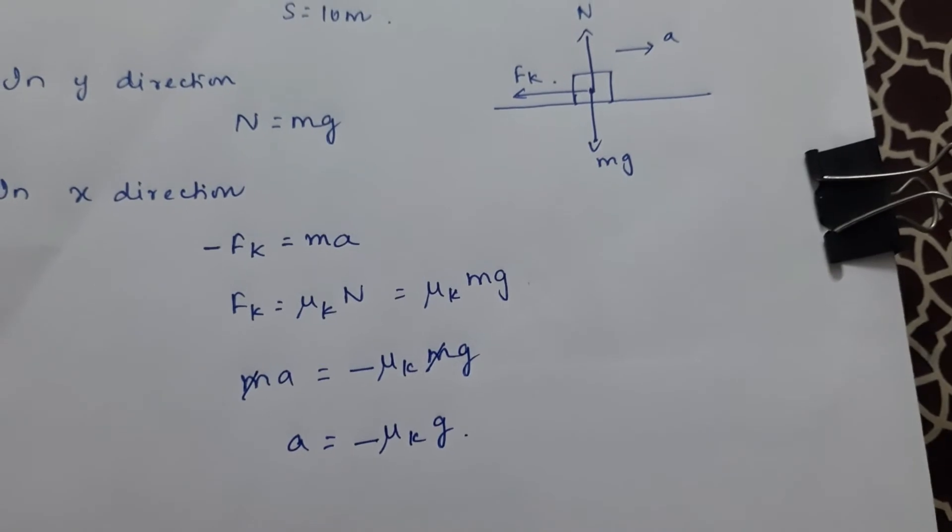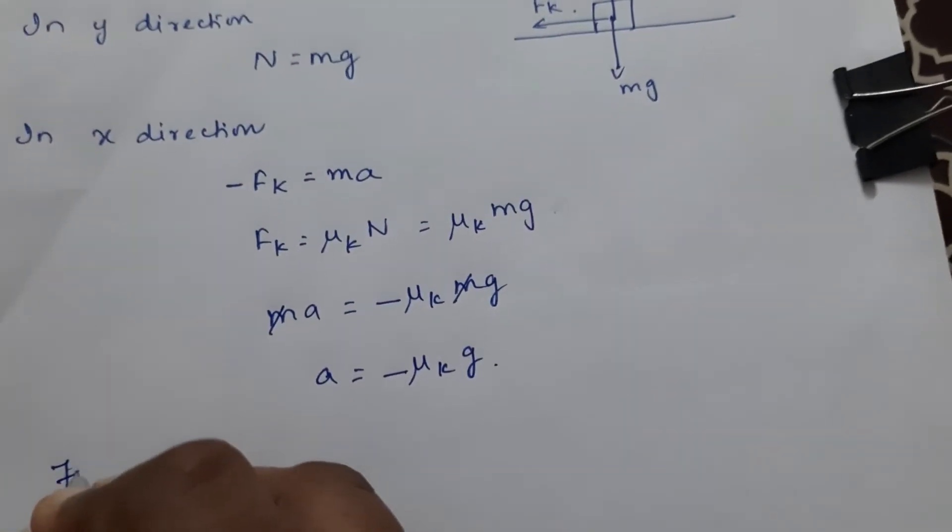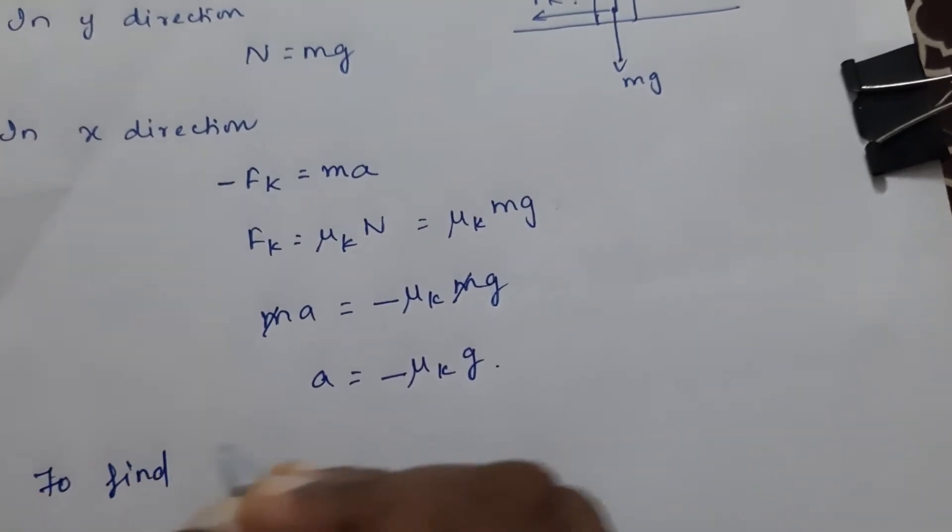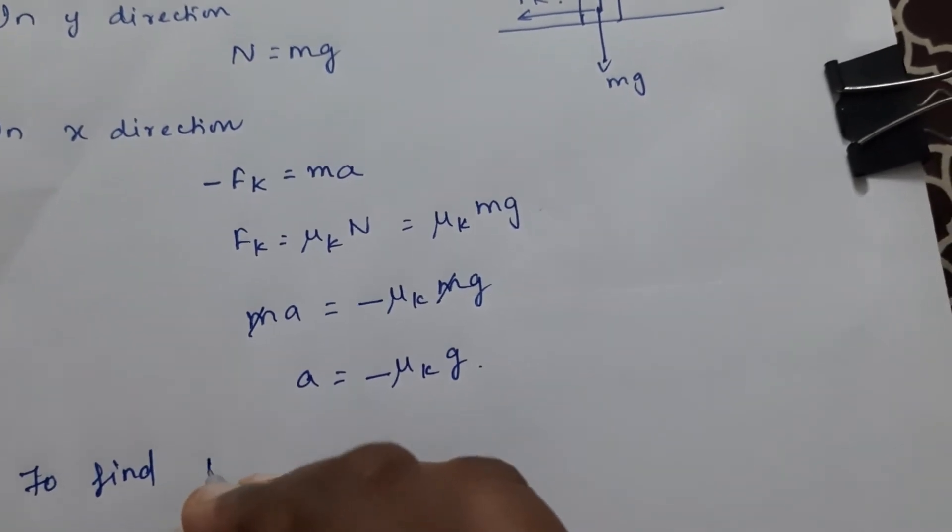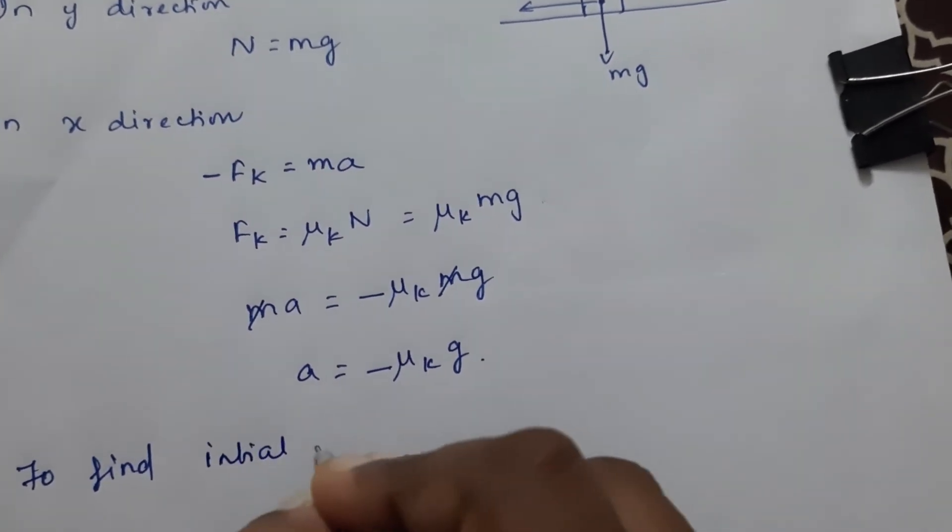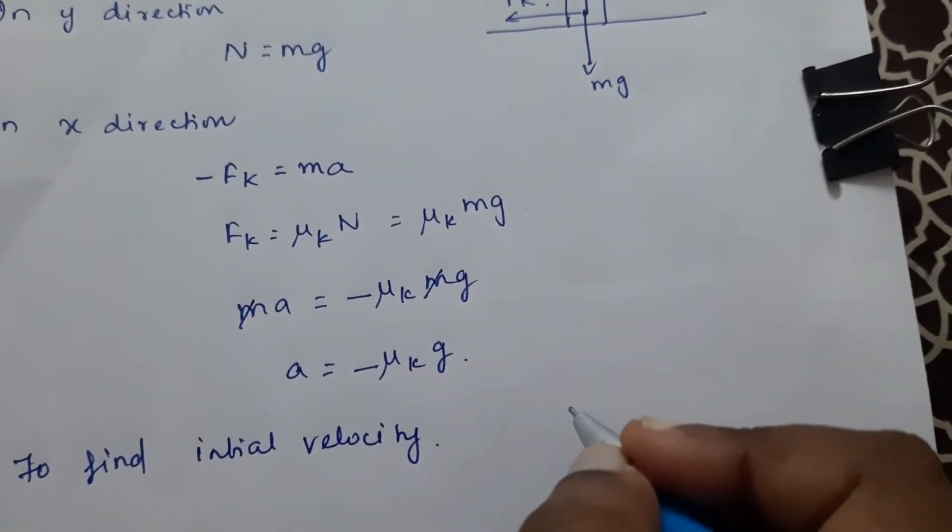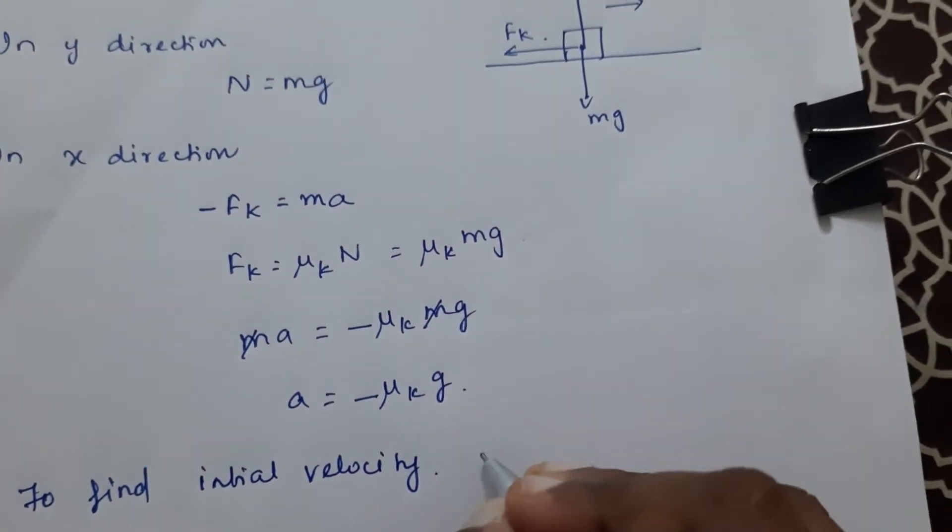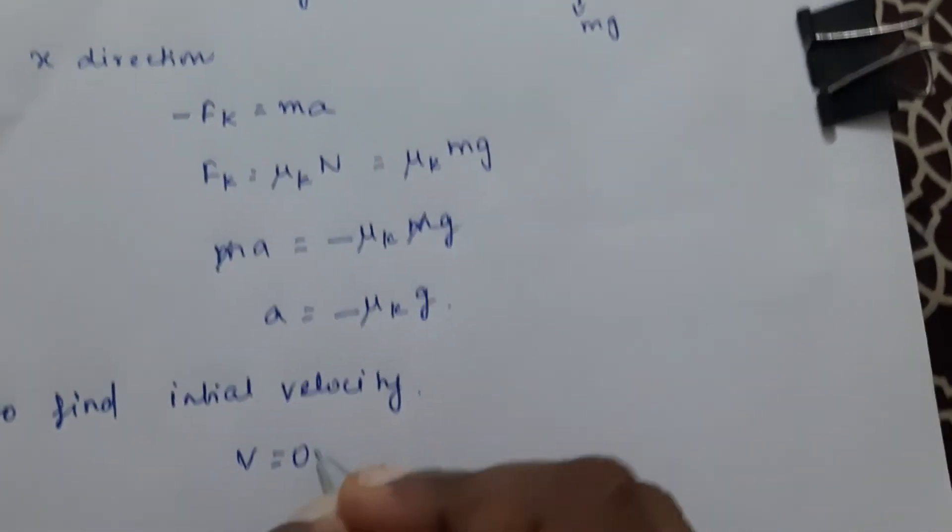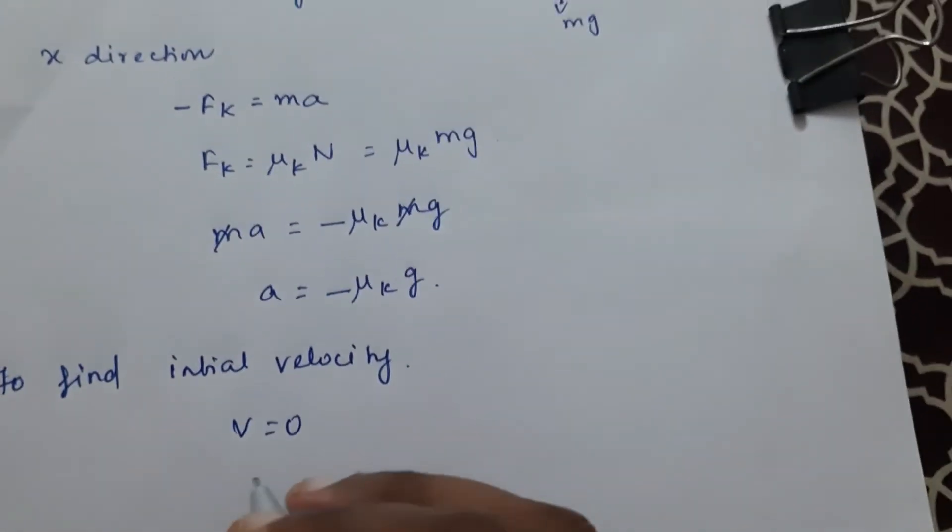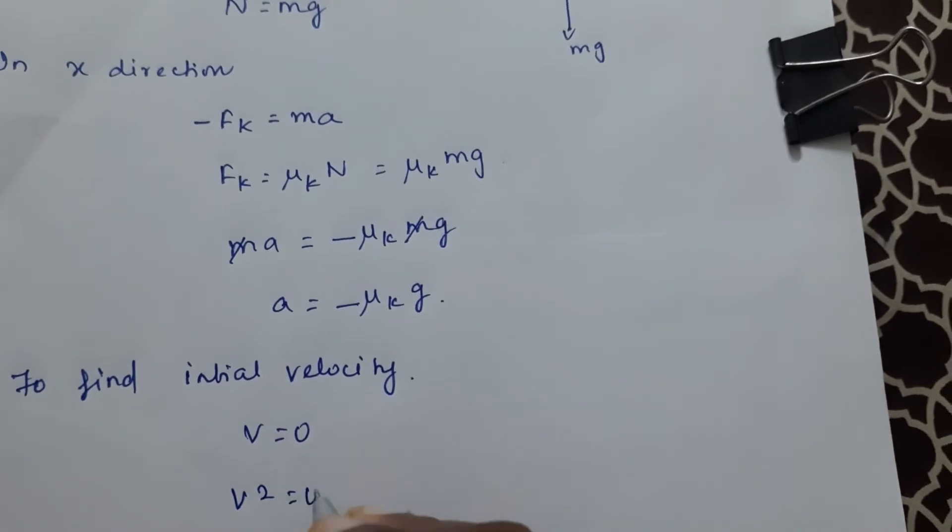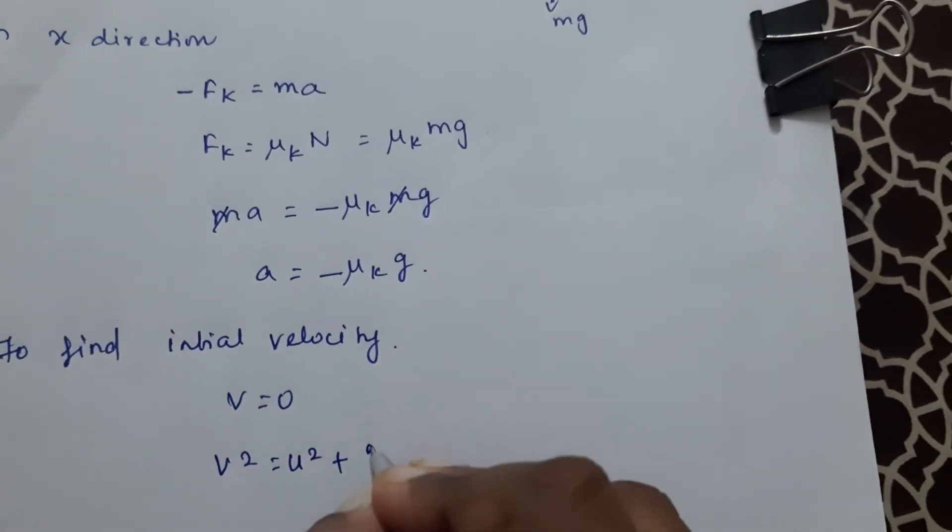Now to find initial velocity, because the object is coming to rest, the final velocity will be zero. So we are using the formula v² is equal to u² plus 2as.